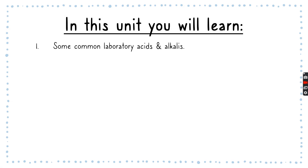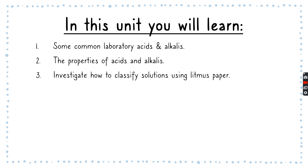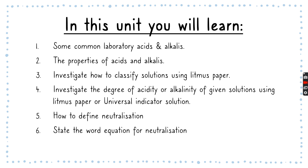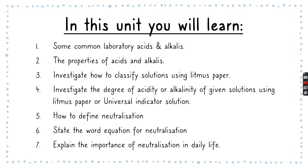In this unit, we have checked out some of the common laboratory acids and alkalies, through properties of acids and alkalies, investigating how to classify solutions using litmus paper, and investigating the degree of acidity or alkalinity of given solutions — remember that degree of acidity or alkalinity is actually pH. We looked at how to find out the pH of a solution using litmus paper or universal indicator solution. But today we are going to find out how to define neutralization, how to state the word equation for that, and explain what is the importance of neutralization in daily life.